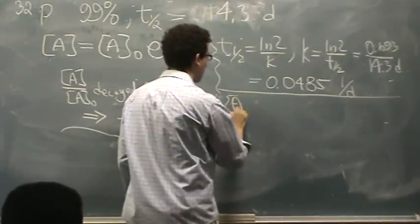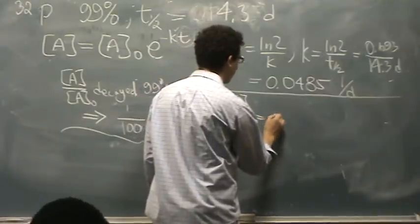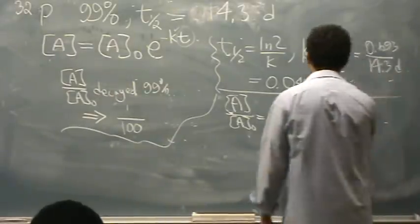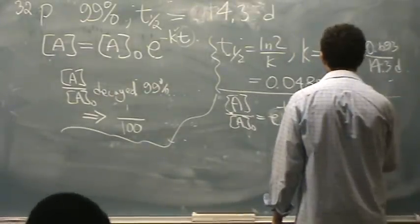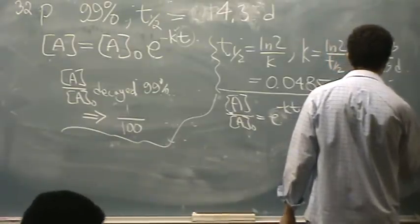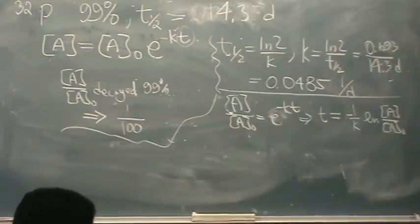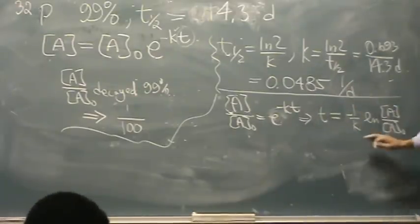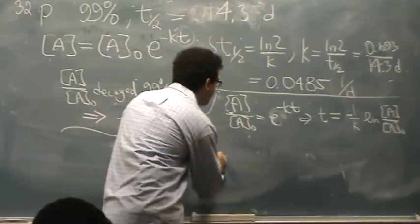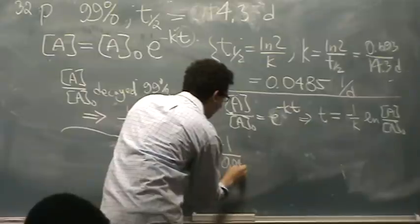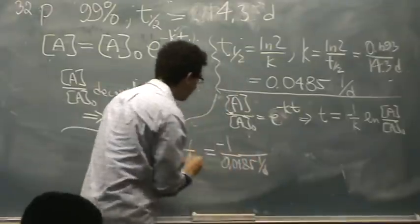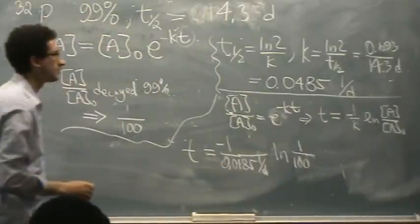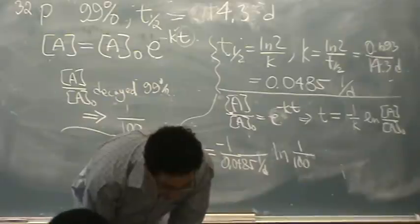And then you just use that info to plug into this formula. So let me rewrite it. A over a-naught equals e to the minus kt. Or I can rewrite that a different way, taking the natural log of both sides. Time is going to equal negative 1 over k, natural log of a over a-naught. So taking the natural log of both sides, I can rewrite the e by both sides through by minus k. Now I just plug into this formula. T is going to equal minus 1 over k. k is 0.0485, 1 over days. So that means my answer in time will be in days, unless I convert it, times the natural log of 1 over 100. And to that I got 95.